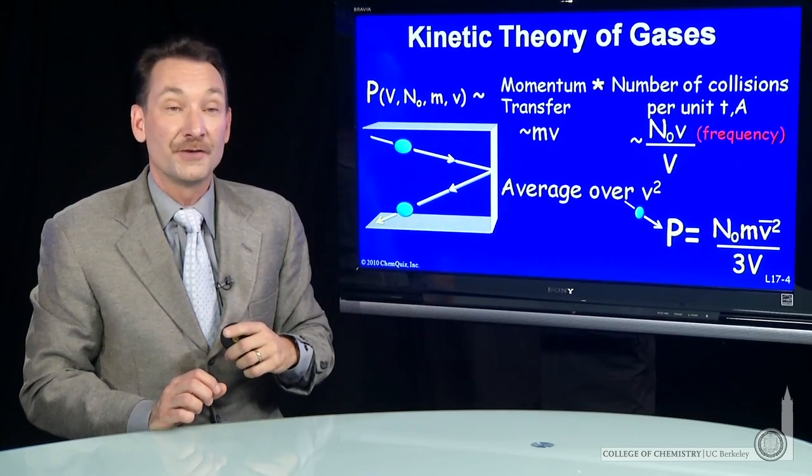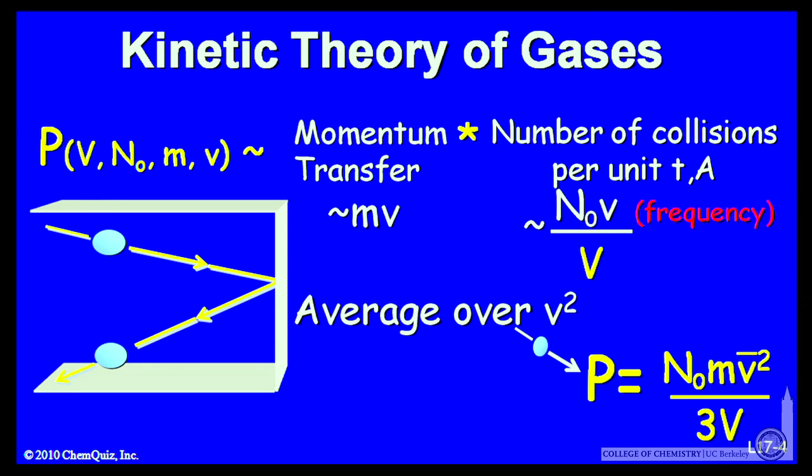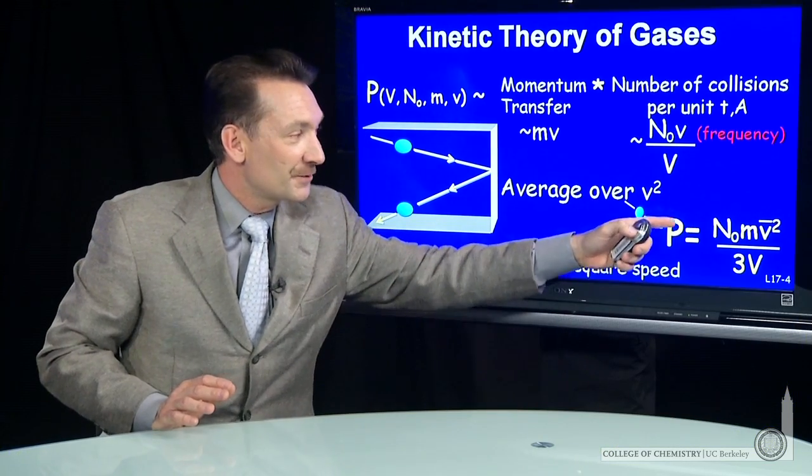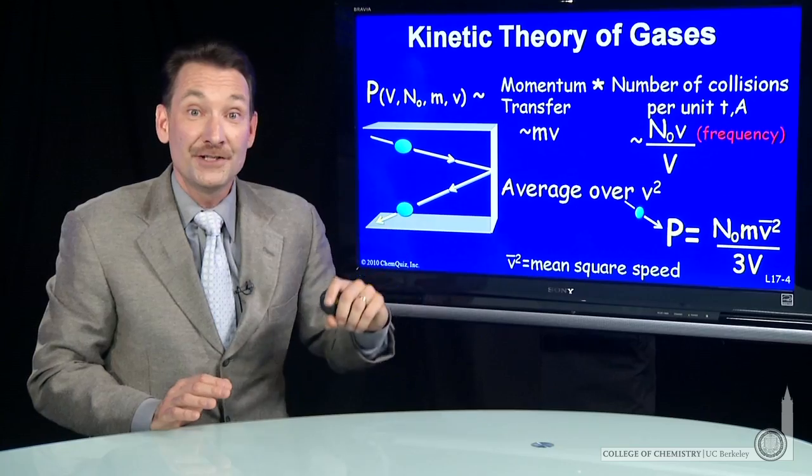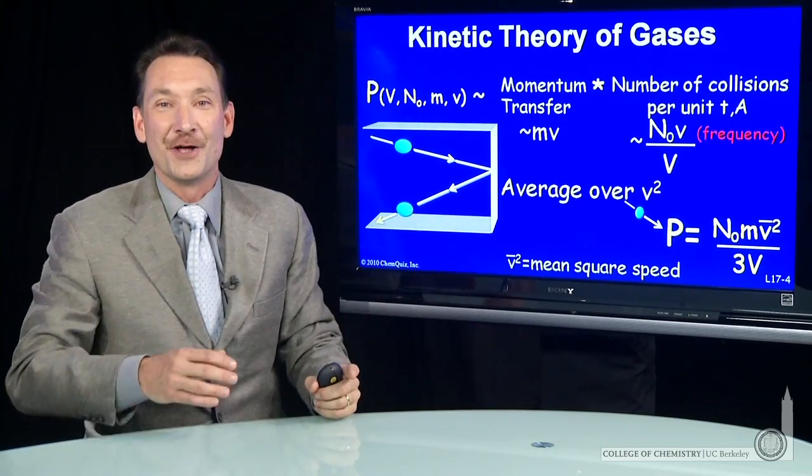When we average over all those velocities, we'll put a bar to give us the average velocity in the sample. And we'll call that v bar squared, the mean square speed. So this expression for the pressure, the average mean square speed, the number of particles, their masses, and the volume.